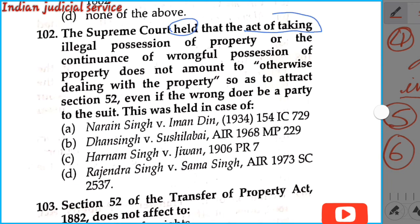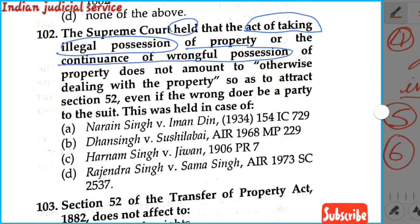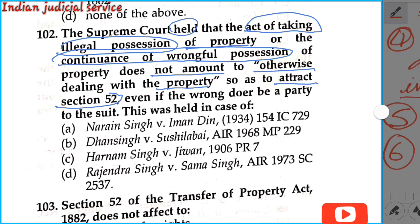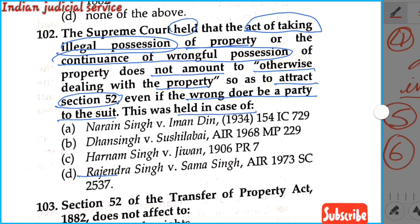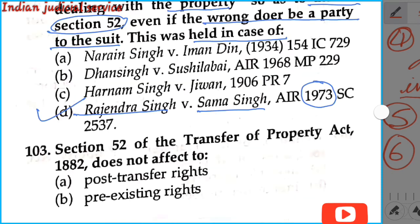Question number 102: The Supreme Court held that the act of taking illegal possession of property, or the continuance of wrongful possession of property, does not amount to 'otherwise dealing with the property' so as to attract section 52, even if the wrongdoer be a party to the suit. This was held in the case of Rajendra Singh versus Sama Singh, AIR 1973. Our answer is option D.